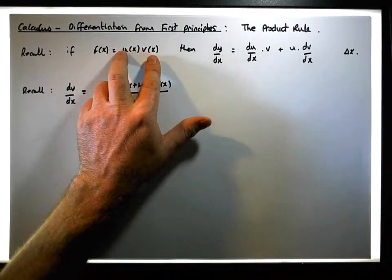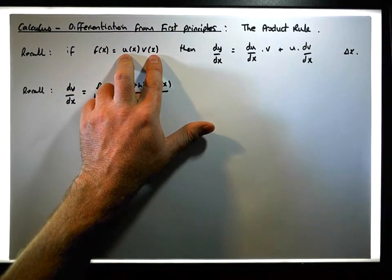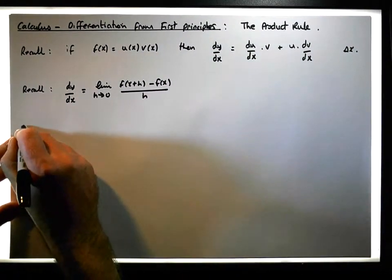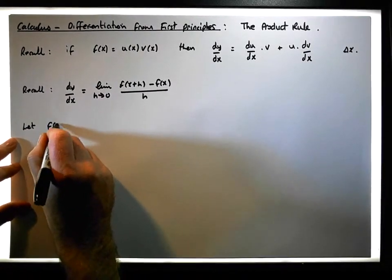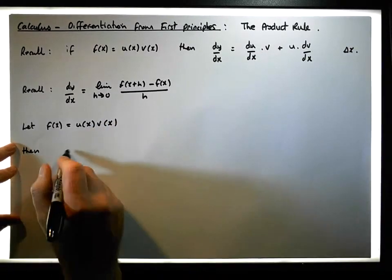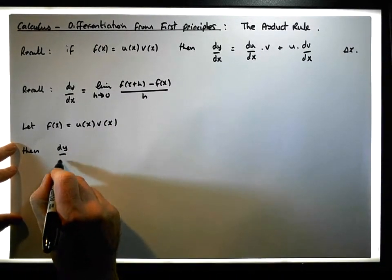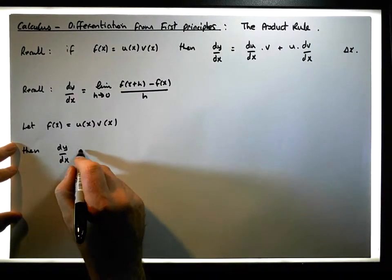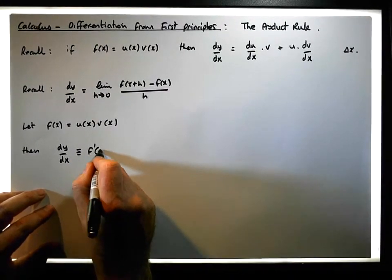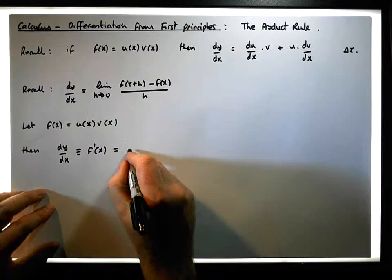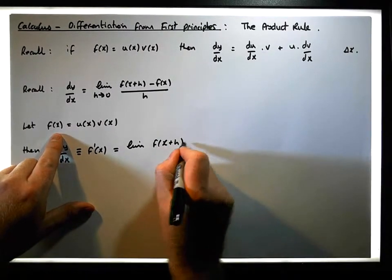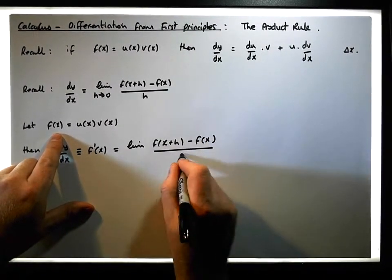We have this function f(x), which is the product of two functions in x, and both u and v are differentiable. We'd like to find their derivative. So let f(x) = u(x) times v(x). Then the derivative f'(x) is equal to the limit of f(x+h) minus f(x) all over h, as h tends to zero.